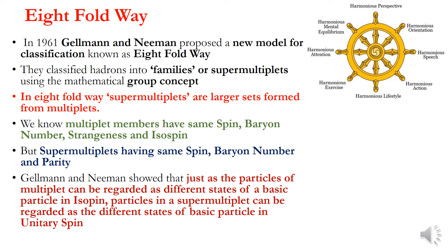As the number of particles in the world of particle physics increased, there were many efforts to bring order to this world. Many classification schemes were proposed; the Sakata model was one of them. In 1961, Gell-Mann and Ne'eman proposed a new model of classification known as the Eightfold Way.